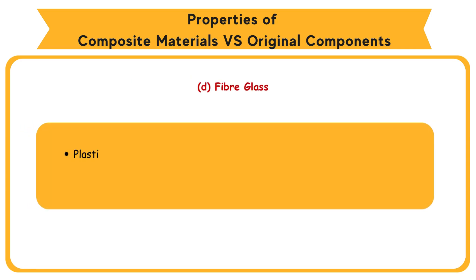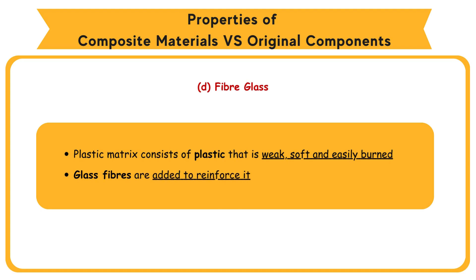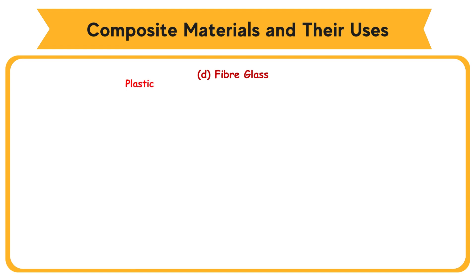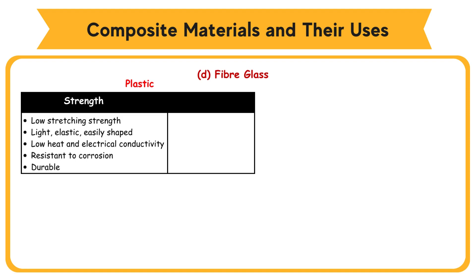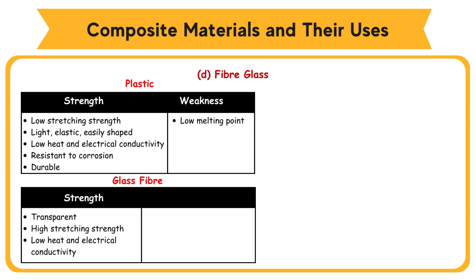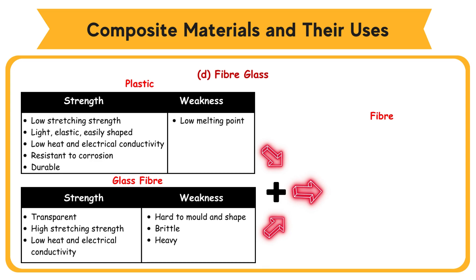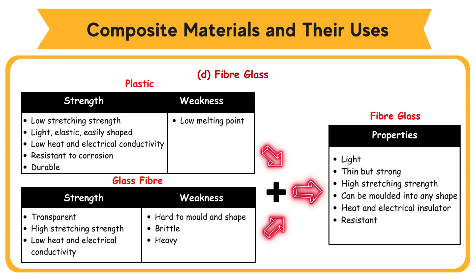D: Fiberglass. Plastic matrix consists of plastic that is weak, soft, and easily burned. Glass fibers are added to reinforce it. Plastic strengths: low stretching strength, light, elastic, easily shaped, low heat and electrical conductivity, resistant to corrosion. Weakness: low melting point. Glass fiber strengths: transparent, high stretching strength, low heat and electrical conductivity. Weakness: hard to mold and shape, brittle, heavy. Plastics combined with glass fiber become fiberglass with properties: light, thin but strong, high stretching strength, can be molded into any shape, heat and electrical insulator, resistant to corrosion, and durable.